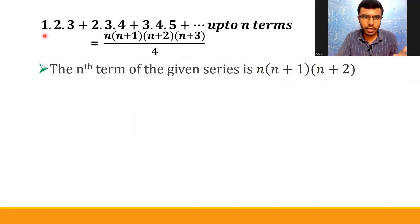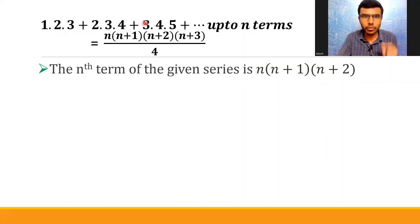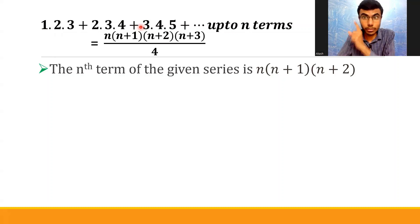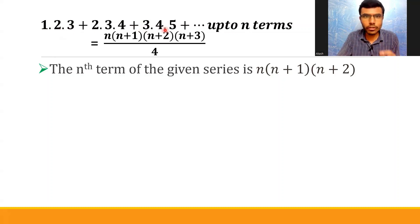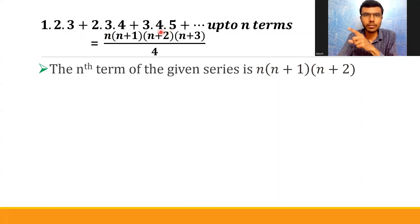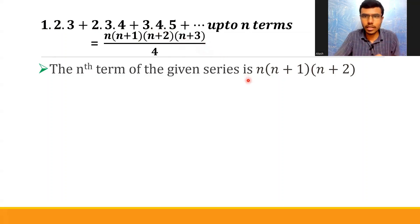Observe the pattern. See the first numbers in each term: 1, 2, 3 — so the nth term is going to be n. The second numbers are 2, 3, 4 — so the nth term is n+1. The third numbers are 3, 4, 5 — so the nth term is n+2. And my final nth term is going to be the product of those three: n(n+1)(n+2).